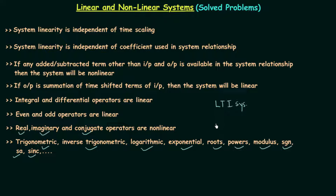We should know how to check the linearity of the system and how to check the time variancy. From the lectures on time invariant and time variant systems, we obtained three conditions for a system to be time invariant. We have obtained eight properties so far for checking linearity, with two still remaining. Once we cover all the properties, I will explain how to check linearity using transfer characteristics.